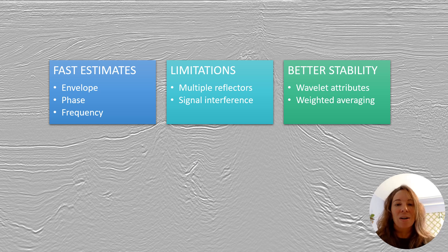This is where wavelet and weighted attributes come into play. By focusing on the most energetic parts of our signal or using weighted averaging, these attributes provide more stable results even when dealing with interfering waveforms. They're like a selective filter that you could use to focus on the strongest voices in our data.